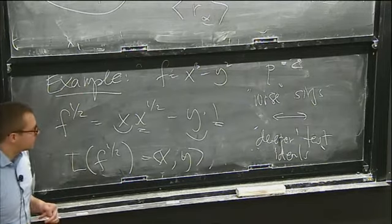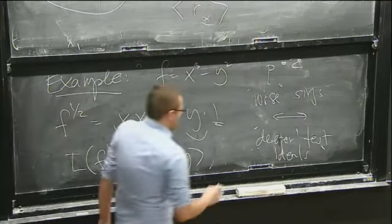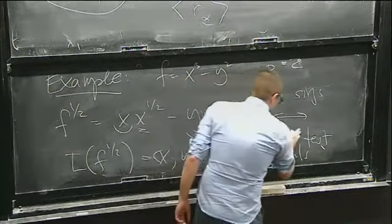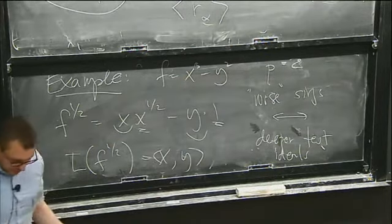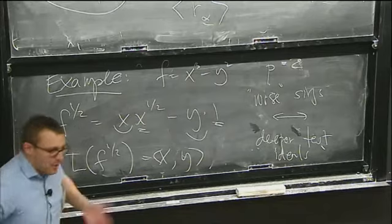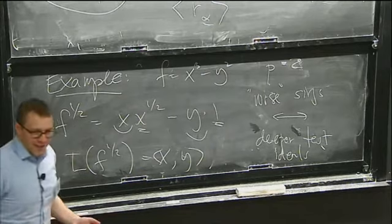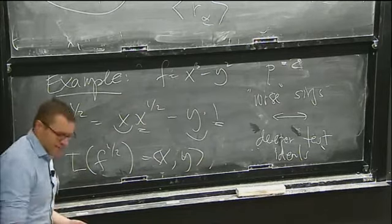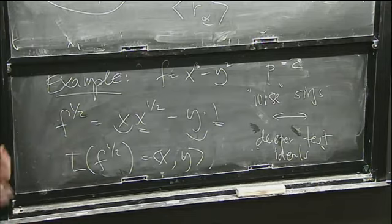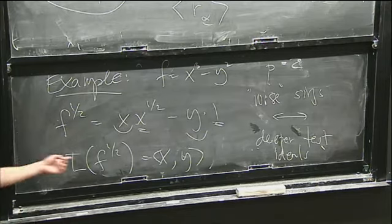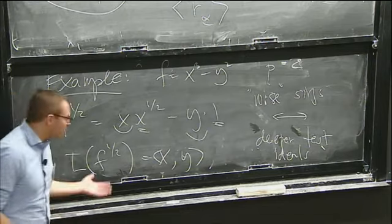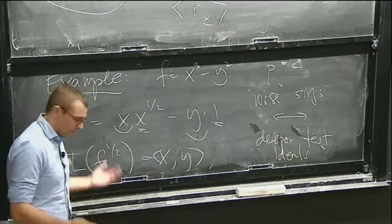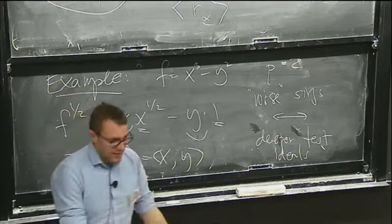Ideals are not linearly ordered. The problem with putting this down is if I give you two ideals where neither is contained in the other, this says very little. But certainly I want to view it as: if I take two different things with the same exponent and I get a smaller test ideal for one of the two, then that's a worse singularity from this perspective.